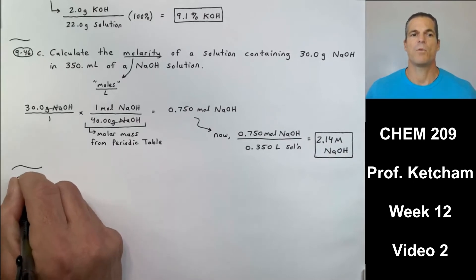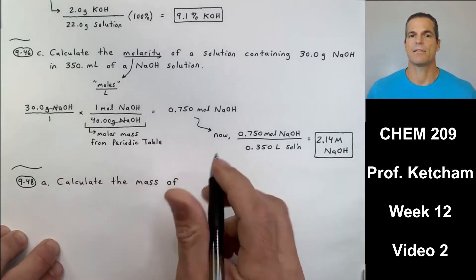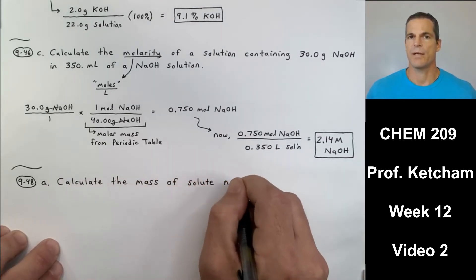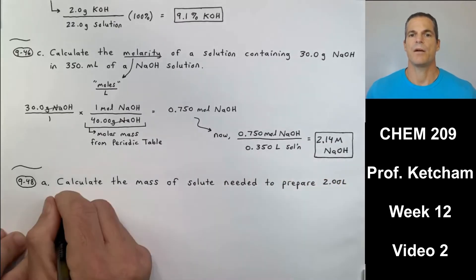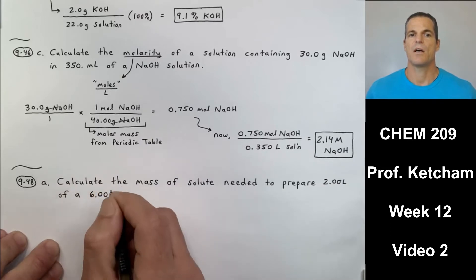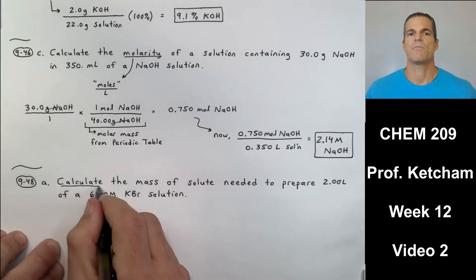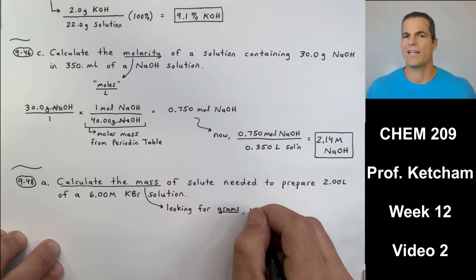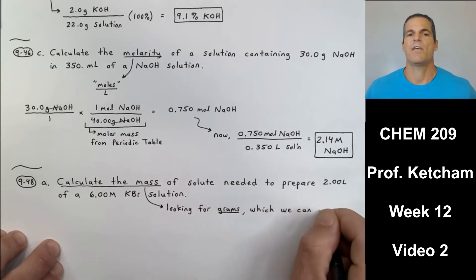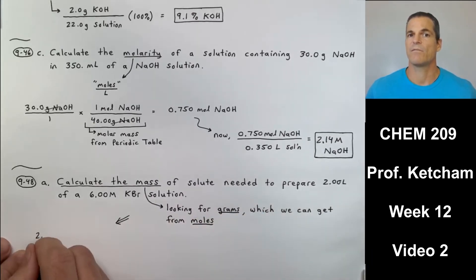Next sample problem from your homework is 48A from chapter nine. We want to calculate the mass of solutes. We're looking for grams. Calculate the mass of solute needed to prepare 2.00 liters of a 6.00 molar KBr solution. So they're giving me molar, which I know is a mole per liter, and they're giving me a liter. So I see a roundabout way to get to moles. And if they ask me to calculate the mass of solutes, they want the mass of KBr, which I can get from moles of KBr using the periodic table.